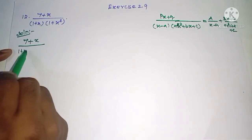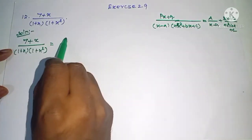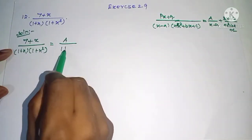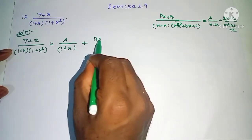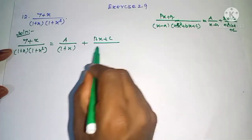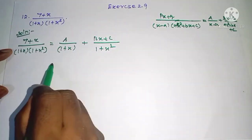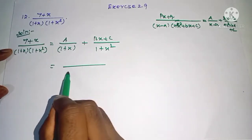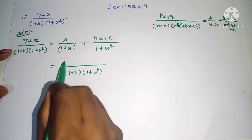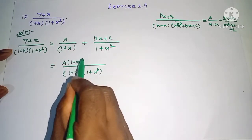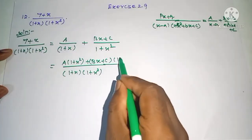So (1 + x) divided by (1 + x²) — this term gives us A divided by (1 + x), plus (Bx + C) divided by (1 + x²). Once we split, the LCM is (1 + x)(1 + x²). So we have: A(1 + x²) plus (Bx + C)(1 + x).